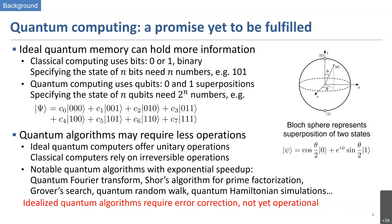The first reason is that ideal quantum memory can potentially hold exponentially more information than a classical computer. Classical computing uses classical bits — 0 and 1 — so to specify the state of n bits, you need exactly n numbers. For example, if you have three bits, you need three numbers like 101 to specify the state of that memory.